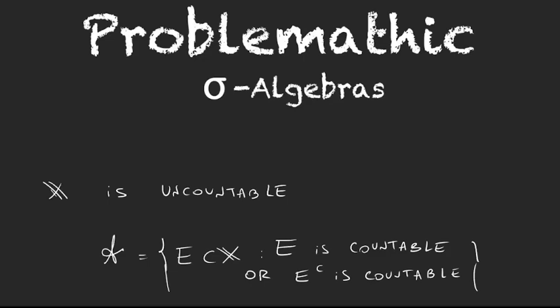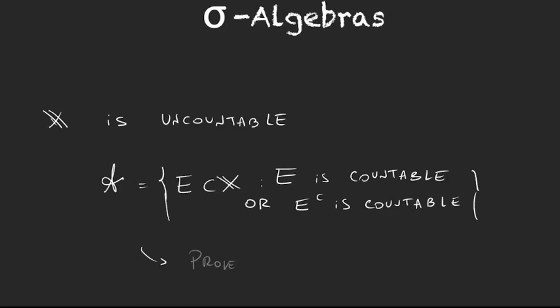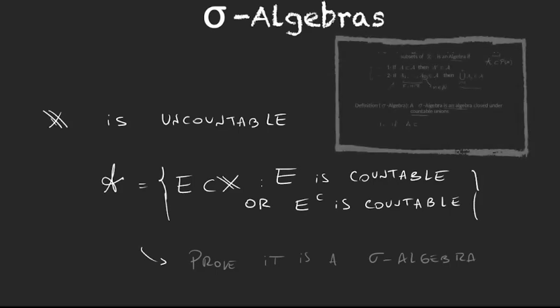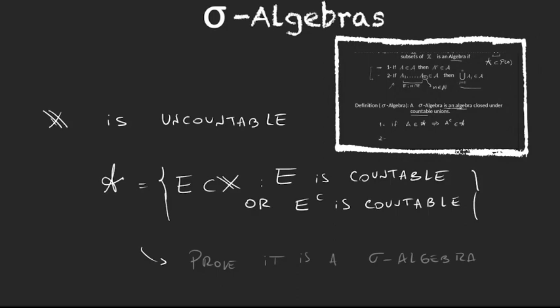What we have to do is just prove that A is a sigma algebra. To check that a set is indeed a sigma algebra, we have to prove two properties: it has to be closed under complements and closed under countable unions.